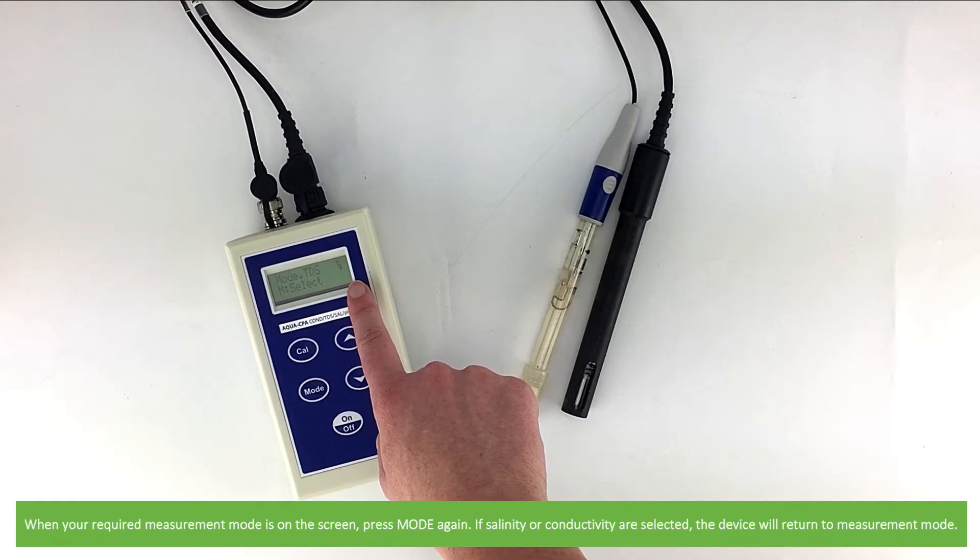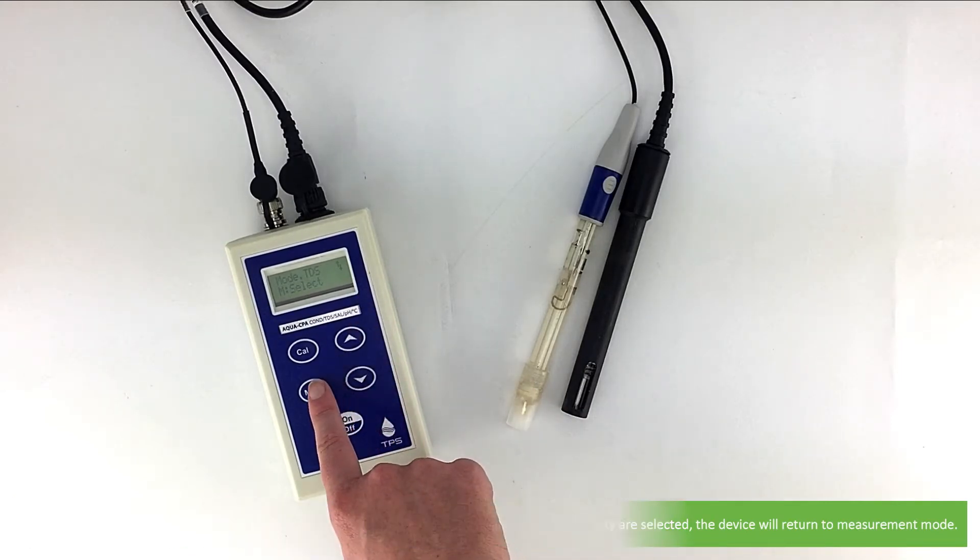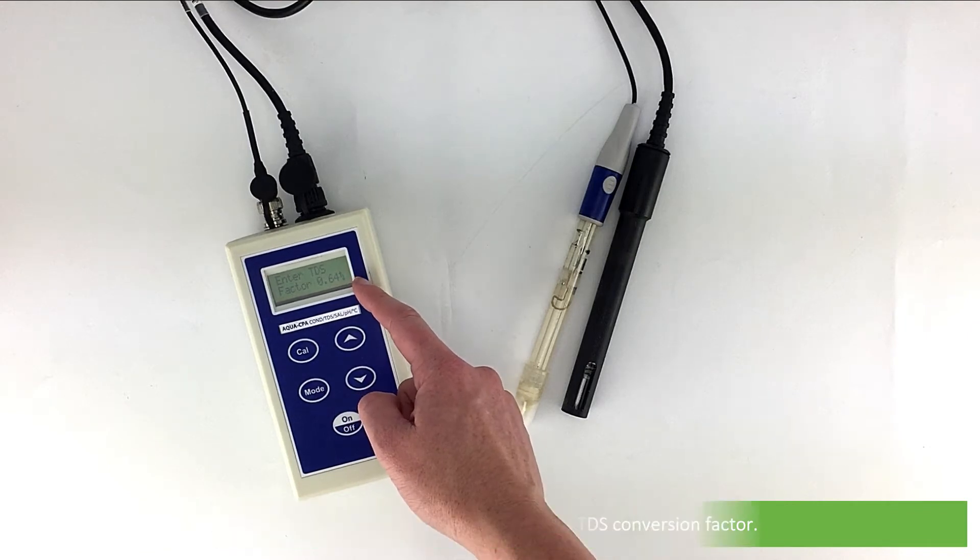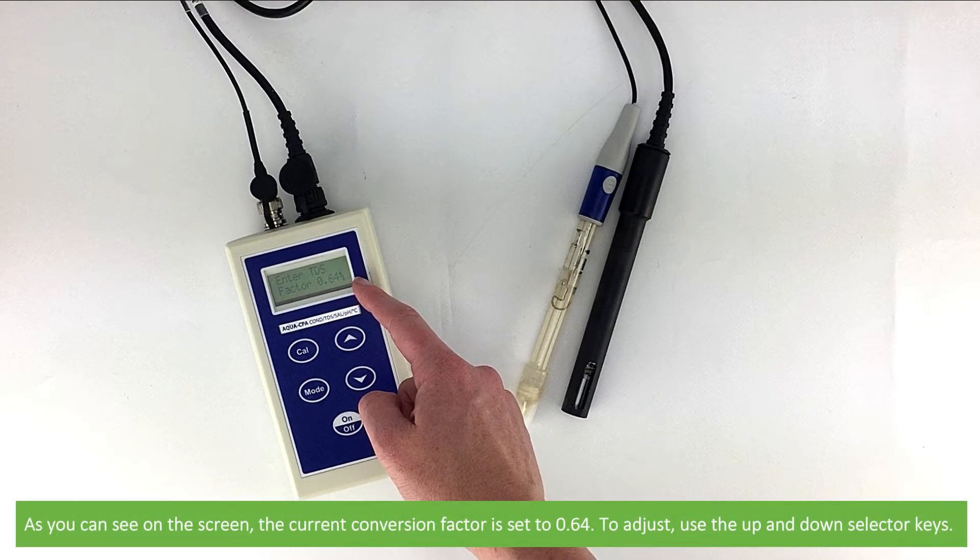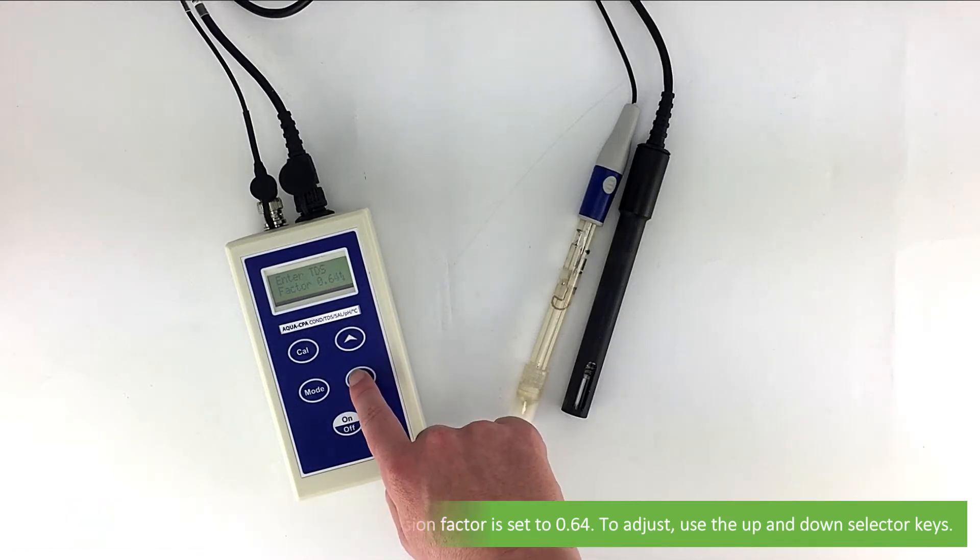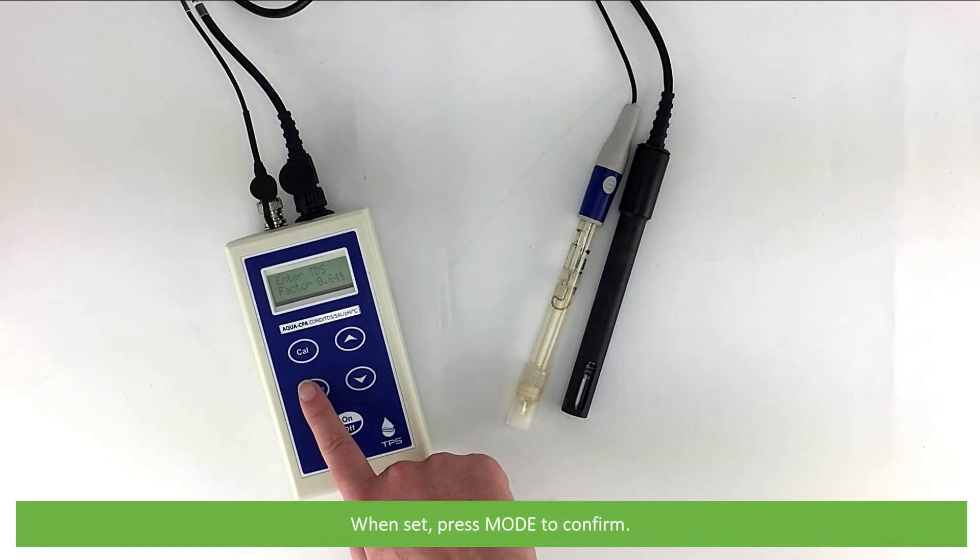If salinity or conductivity is selected, the device will return to measurement mode. If TDS is selected, you will need to choose the TDS conversion factor. As you can see on the screen, the current conversion factor is set to 0.64. To adjust, use the up and down selector keys. When set, press mode to confirm.